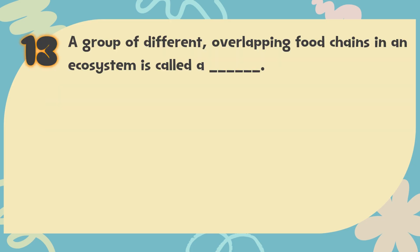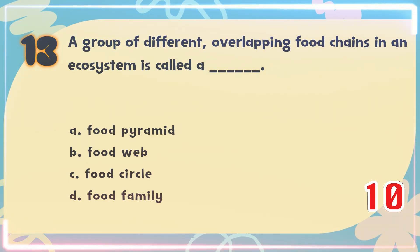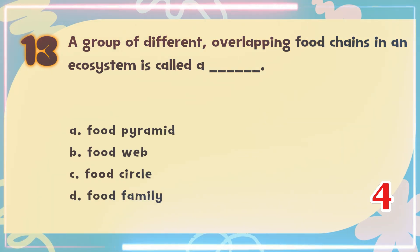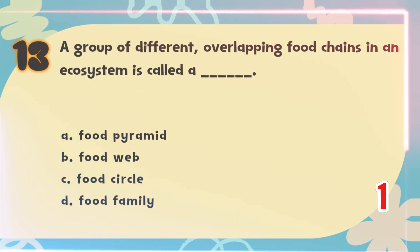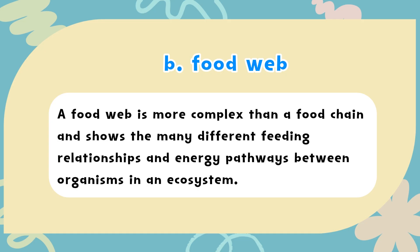Number 13. A group of different, overlapping food chains in an ecosystem is called a blank. The choices are: A. Food pyramid, B. Food web, C. Food circle, D. Food family. The correct answer is B. Food web. A food web is more complex than a food chain and shows the many different feeding relationships and energy pathways between organisms in an ecosystem.